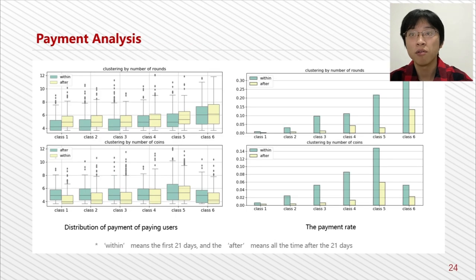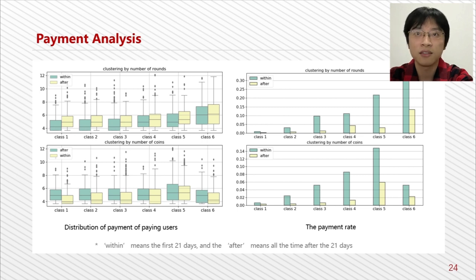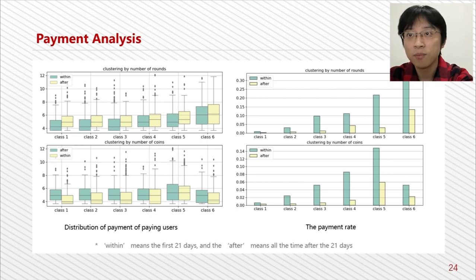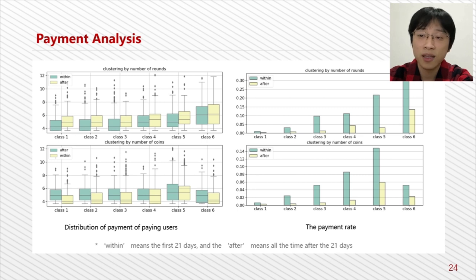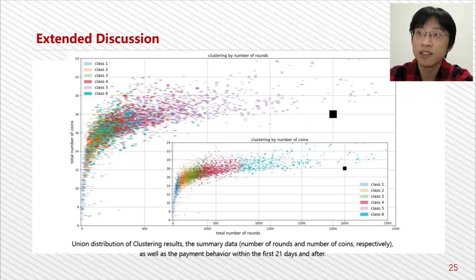As to payment, which is of course the most important part, class 1 by number of rounds shows that those who play longer pay more, and the payment rate decreases significantly after the first 21 days, but those who keep playing tend to pay more. The class results by number of coins show a different kind of classification — class 6 pays even less than class 4, which suggests that players who win too many coins in the game may not pay more. This figure also shows that the class results obtained by time series are different from those obtained by the summed data.